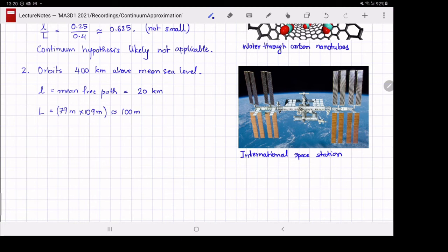This is just like the example of the car. The car's size determines the length scale of the flow that it sets up. Therefore, in this case, l over L, the ratio of the two, is 20 kilometers divided by 100 meters, which is 200. So definitely not small; in fact, it is large. Therefore, this is an obvious situation where continuum is not applicable.